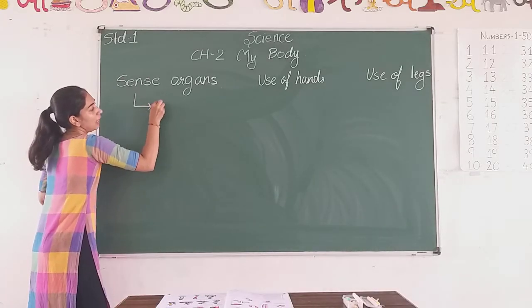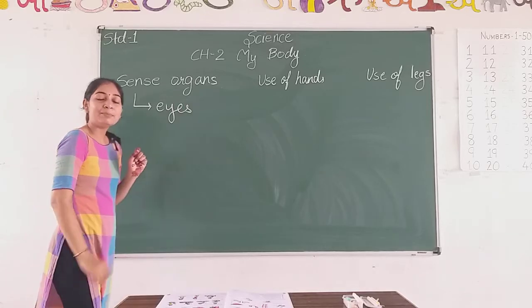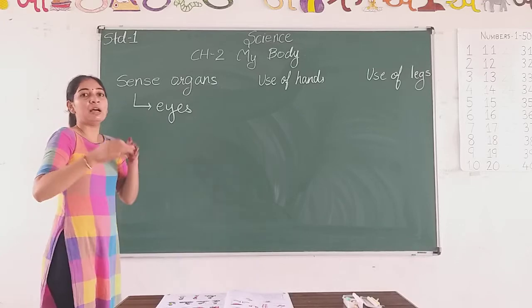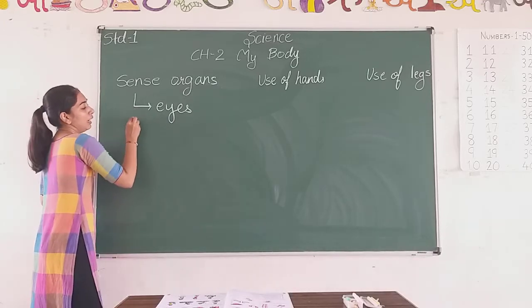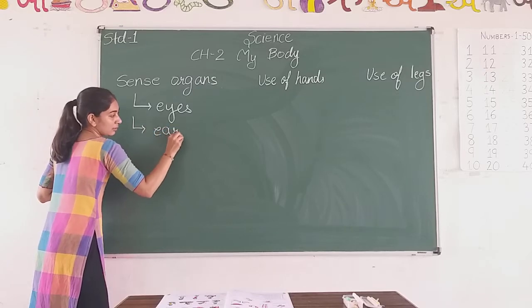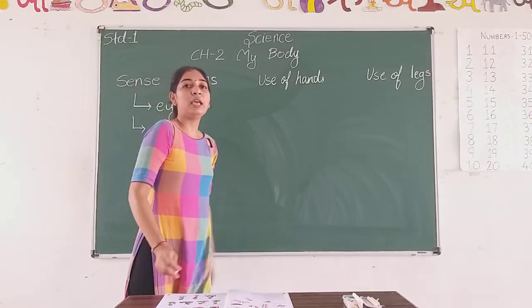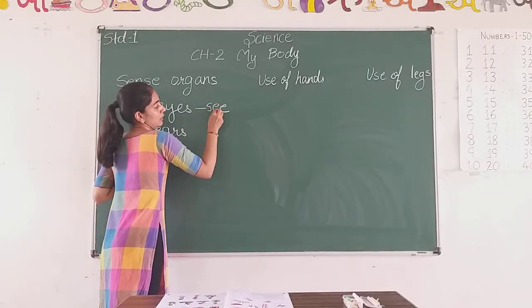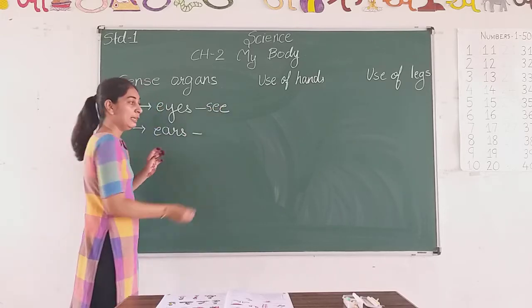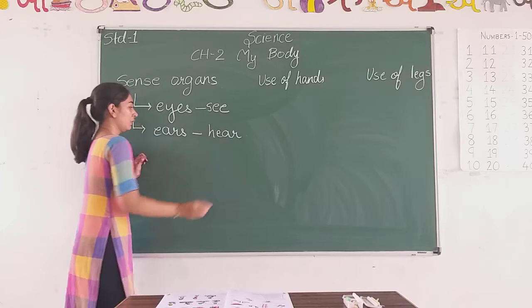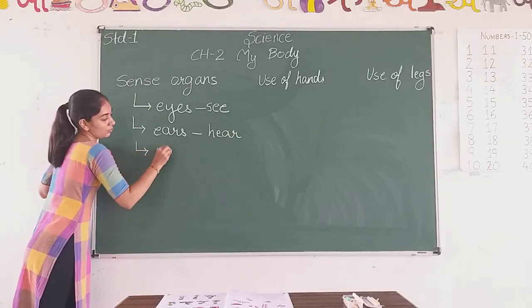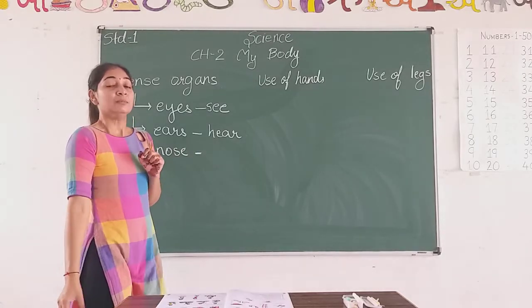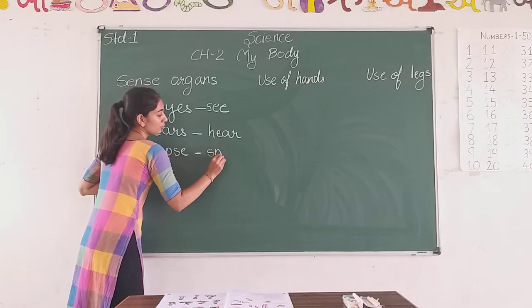The first sense organ is eyes. Eyes help us to see. The next one is ears. Ears help us to hear. Then nose — nose helps us to smell.